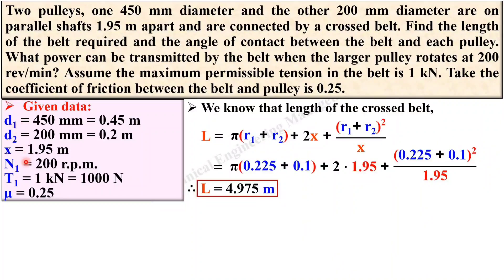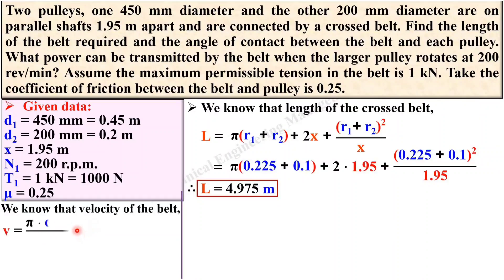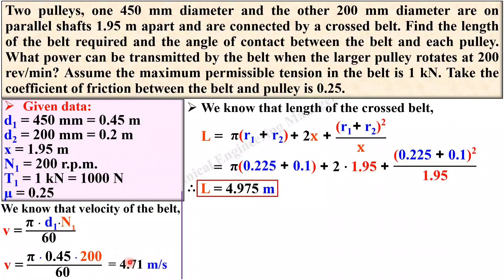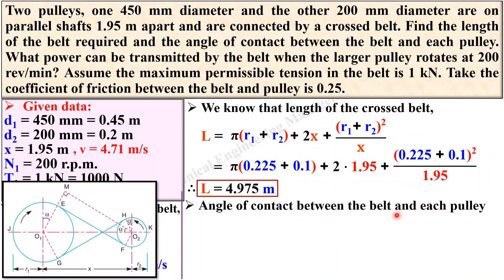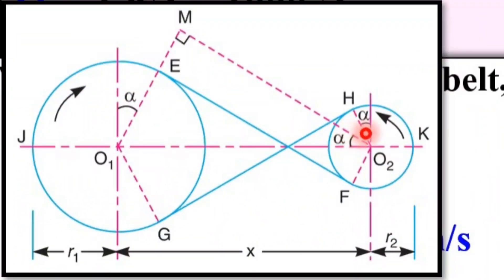Next, you have the diameter and the rpm, so apply the velocity of the belt equation: V = π·d1·n1 / 60. Substitute d1 (in meters) and n1, then simplify. You will get the velocity of the belt as 4.71 m/s. Keep in mind d1 must be in meters so the result is in m/s.